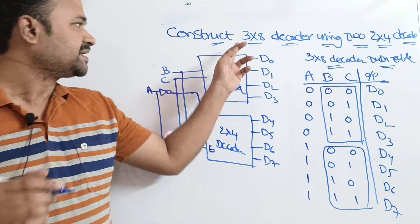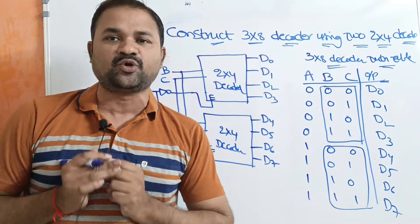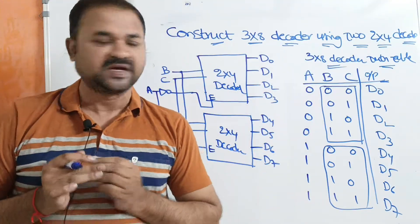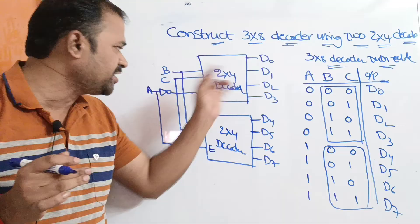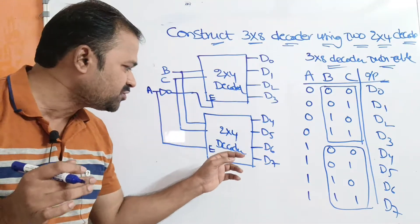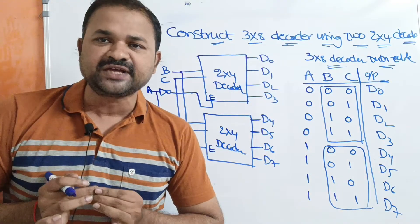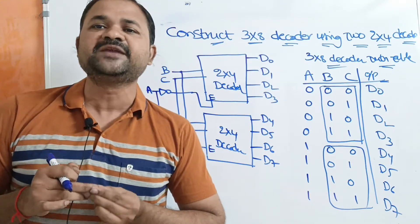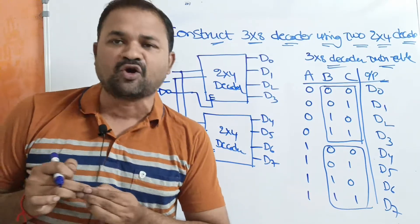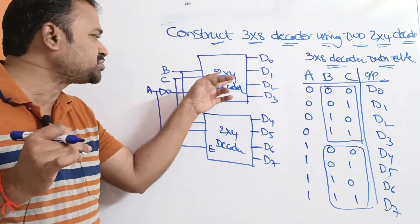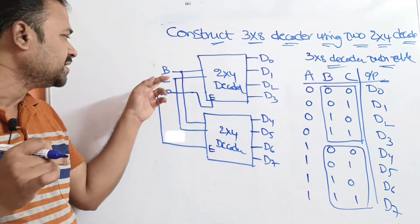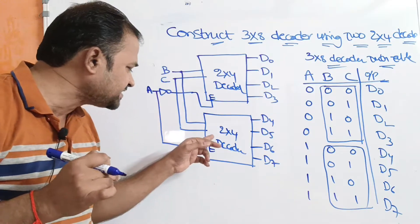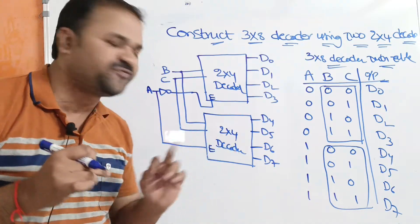Let us discuss constructing a 3x8 decoder using two 2x4 decoders. This is the first 2x4 decoder and this is the second 2x4 decoder. We know that a 2x4 decoder accepts two inputs and produces four outputs. The inputs to the 2x4 decoder are B and C. B and C are supplied as input to the second 2x4 decoder also.